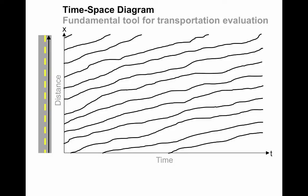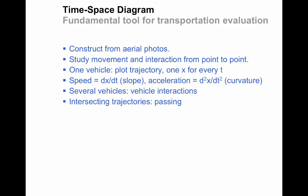Usually traffic is moving up from bottom to top in these kinds of diagrams. We can construct them conceptually from aerial photographs, we can also construct them from high-resolution GPS data that allows us to study the movement of vehicles and their interactions from point to point. One vehicle is represented by something that we call a trajectory, where there's one x for every t. The nice thing about these diagrams is that the speed is simply the derivative of the function, or the slope. At any point along the trajectory, that is that vehicle's instantaneous speed. The curvature of the trajectory represents the acceleration of the vehicle, which is the second derivative of the distance.